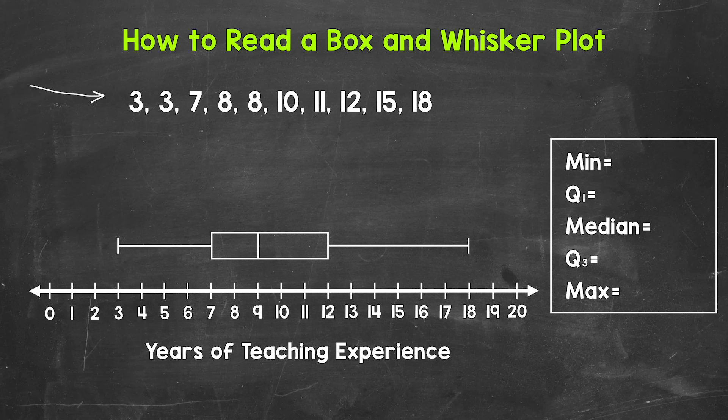Now when it comes to box and whisker plots, there are five key parts. They show us a five-number summary of the data set. Box and whisker plots display the minimum, the first quartile, the median, the third quartile, and the maximum.